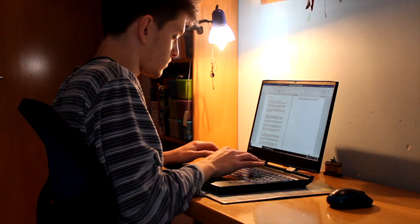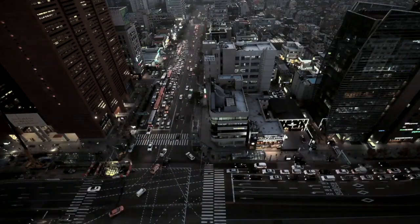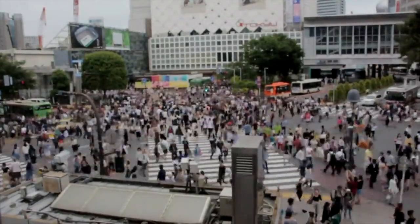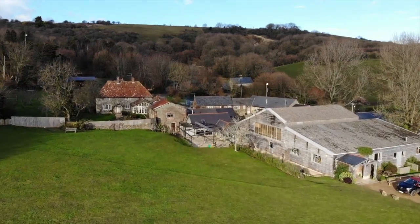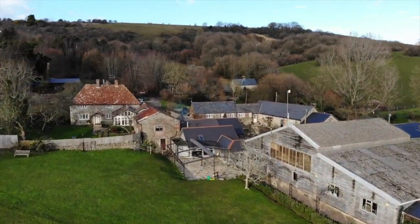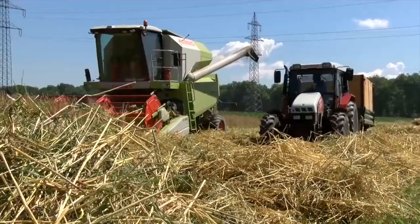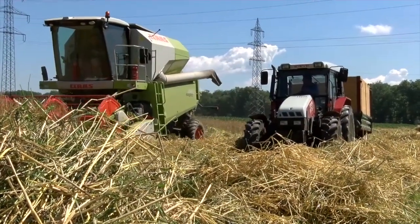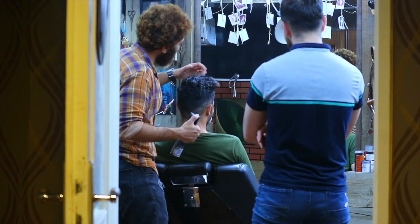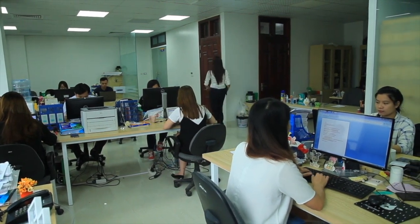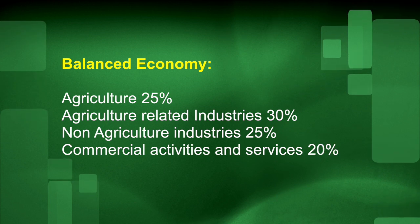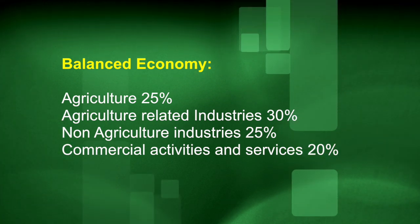Today, because of the internet, many people are able to work from home rather than in congested cities. Further advances in this type of science and technology will greatly aid decentralized planning and living. Inherent in decentralized planning is the concept of a balanced economy. Ideally, approximately 25% of the workforce would be engaged in agriculture, with 30% in agriculture-related industries. A further 25% would be in non-agricultural industries, with 20% in commercial activity and services. Prout believes the economy should be balanced; if one sector is too predominant, this is unhealthy.